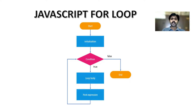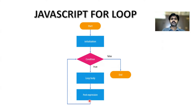First, we start with initialization. We initialize, then we check the condition — for example, i equal to 0, i less than 10. So initialize i equal to 0; for i equal to 0, i less than 10, it will proceed into the loop body. Then comes the post expression — something like i plus plus.